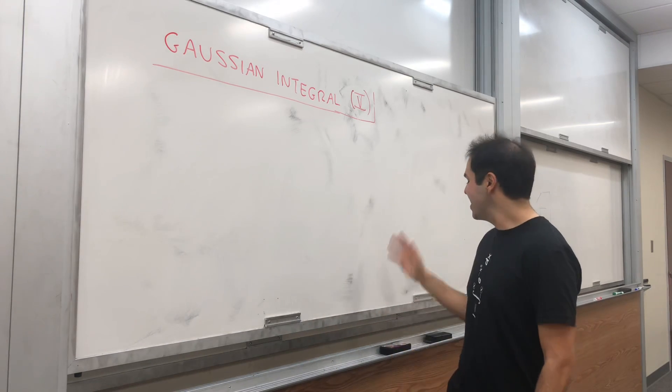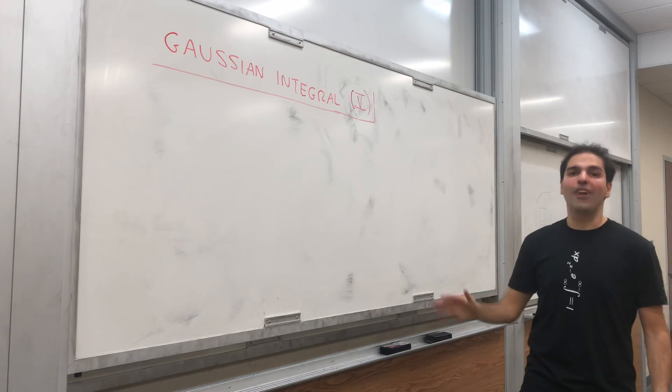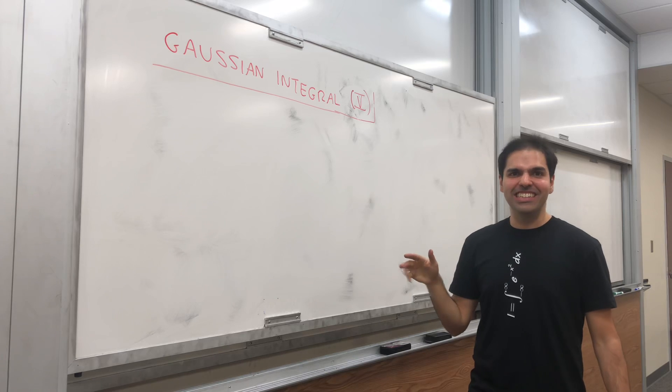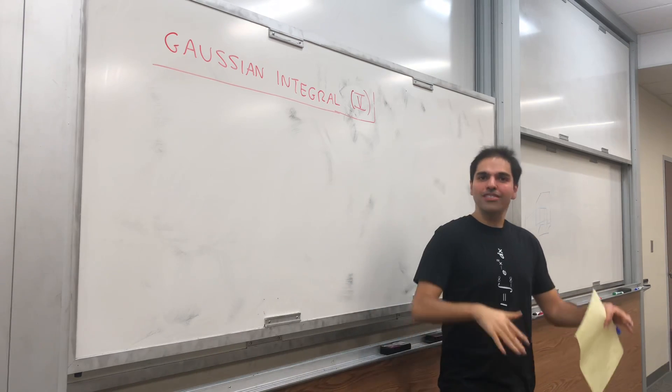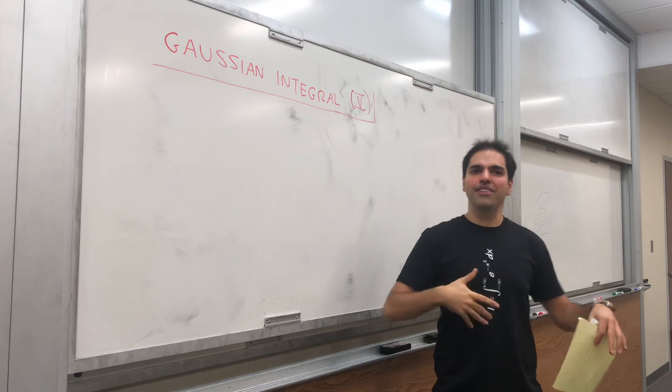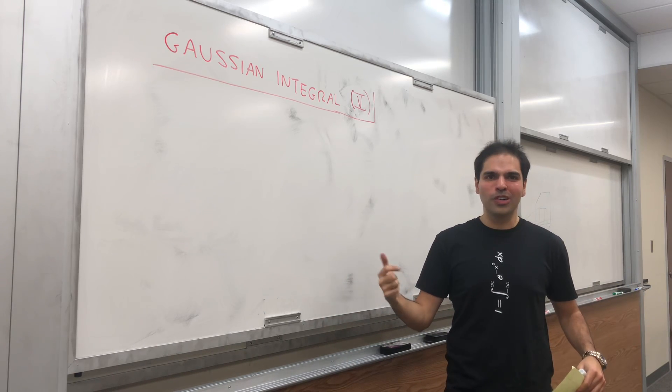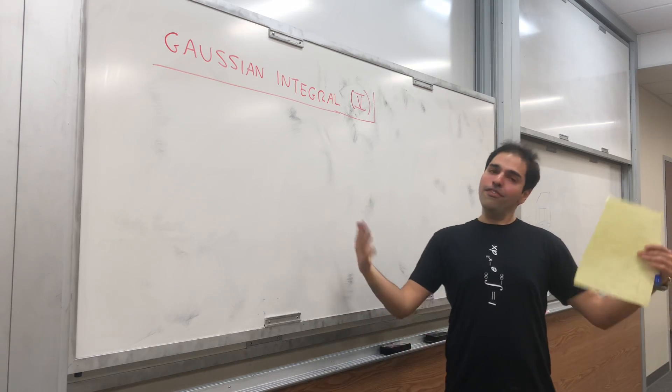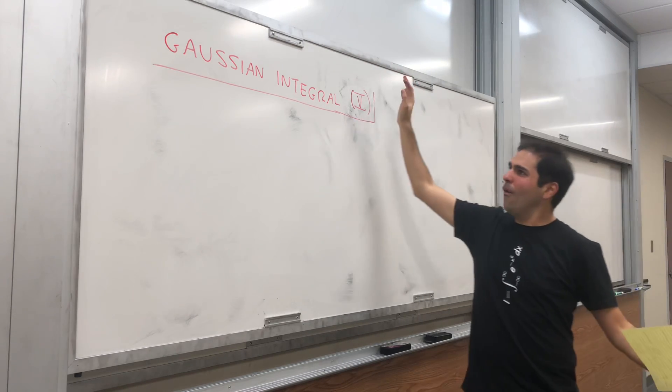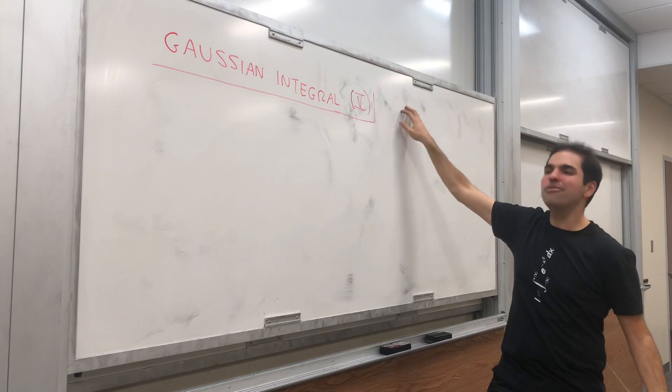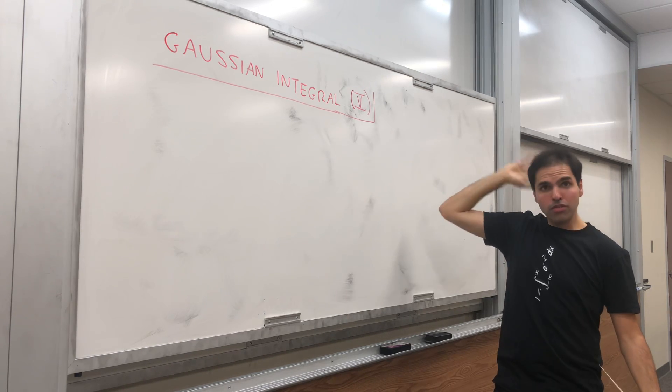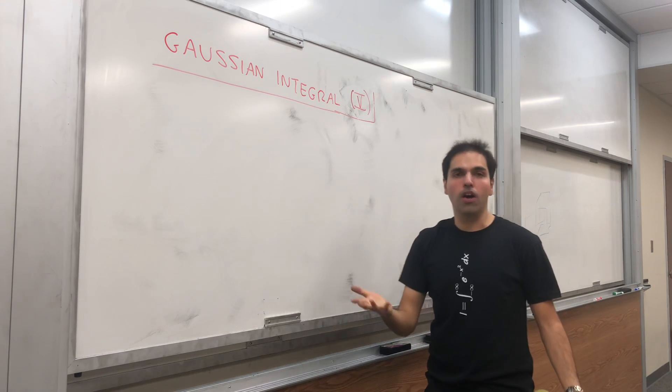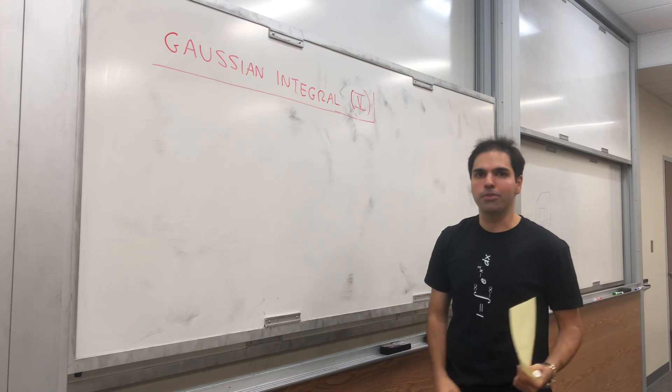Thanks for watching and welcome to our fifth way of doing the Gaussian integral. This is one of my favorite ways because it's actually very geometric and very natural. It involves either Fubini's theorem or the technique of calculating volumes in single variable calculus.